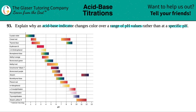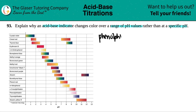As you can see, there is always a change in color over a range of pHs. Let's just pick one — it doesn't really matter which one. Generally we like to talk about phenolphthalein because you'll probably see it in your lab class. Phenolphthalein changes color from a pH of 8 all the way to 10.